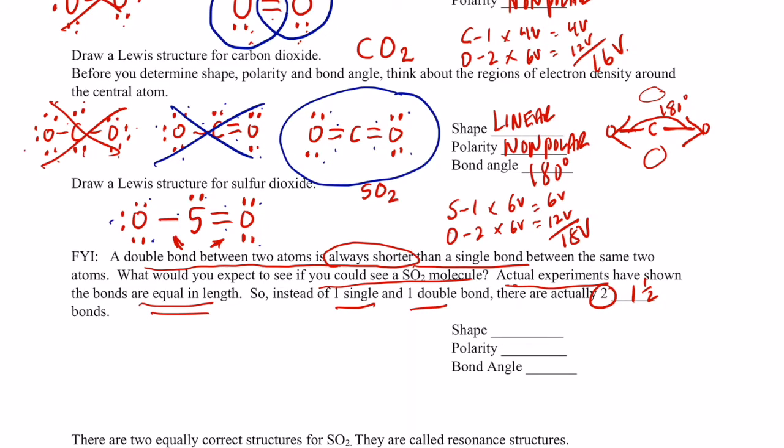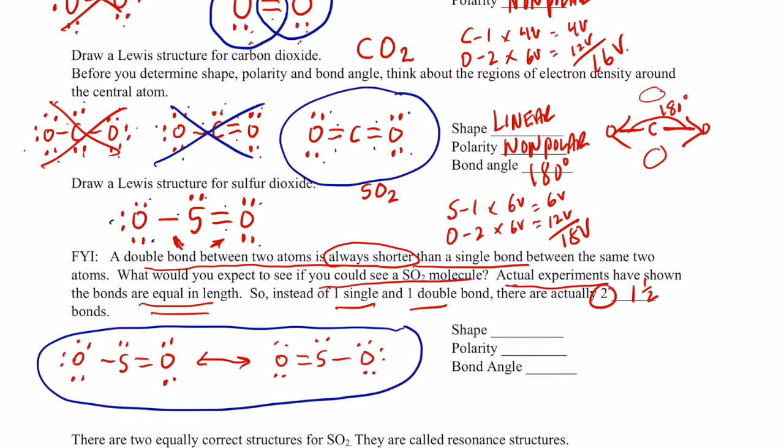So the question is, how do we show that in a Lewis structure? Well, let's go ahead and draw the Lewis structure we already have, showing the double bond on the oxygen to the right. And we have that. Now we know that that double bond is shared in both positions, so the way we show that is we draw an arrow pointing both ways, and we draw the Lewis structure again, but this time we move the double bond over to the other oxygen and complete our octets. So this right here, both of these, would be the correct Lewis structure for sulfur dioxide. Showing the double bond in both positions is called showing resonance structures, showing that that double bond is actually shared in both positions.